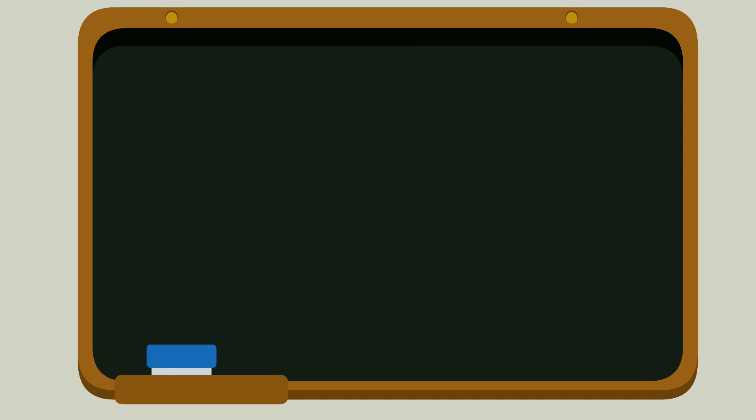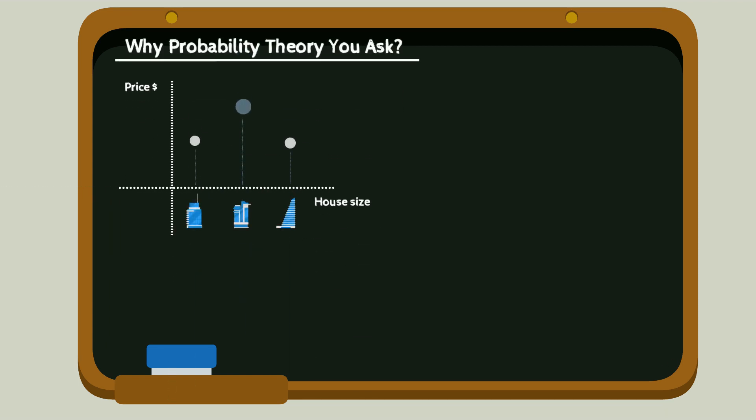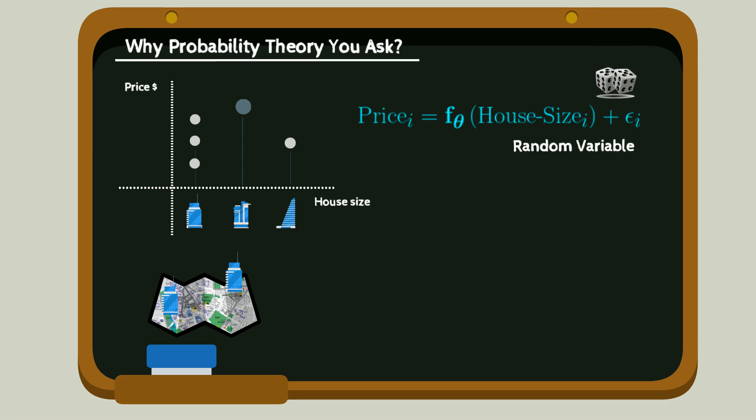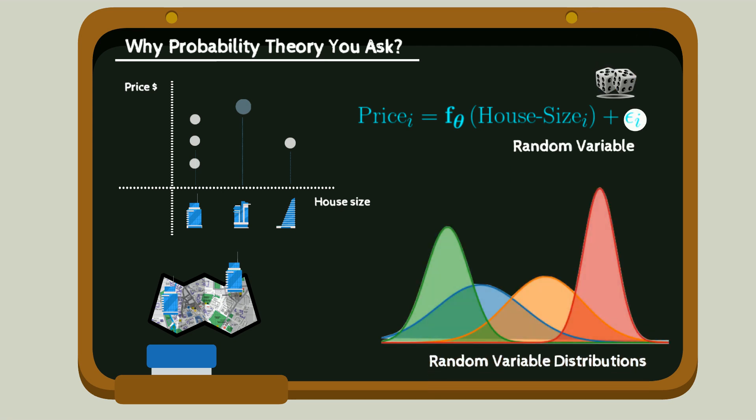Why probability theory? Well, data collection is never perfect. As we only considered house size as inputs, the same house size can have different prices based on location. Therefore, price equals f of size plus something random or a random variable. Let's see how.